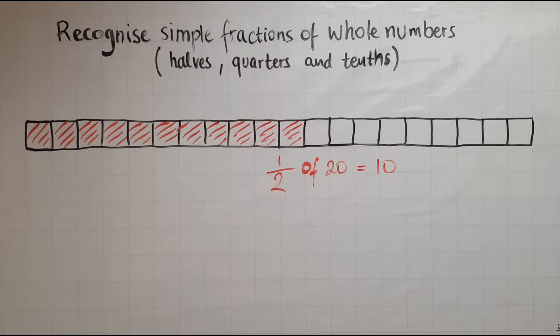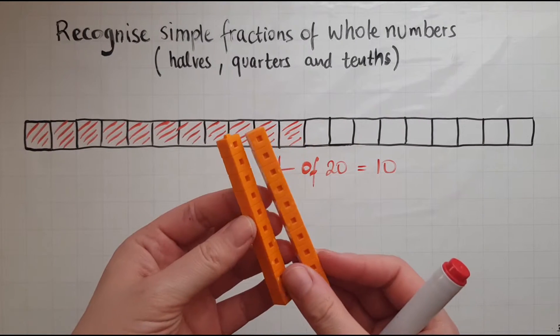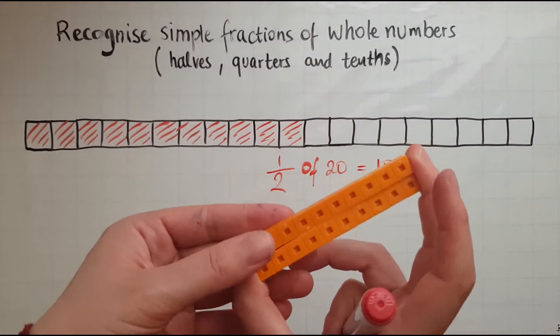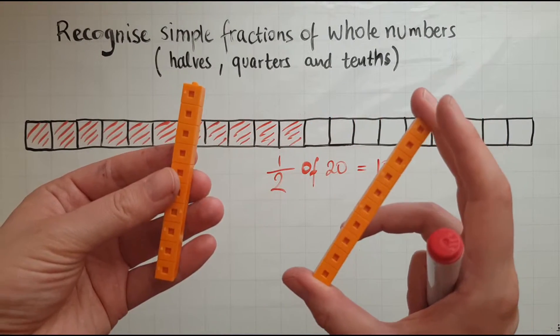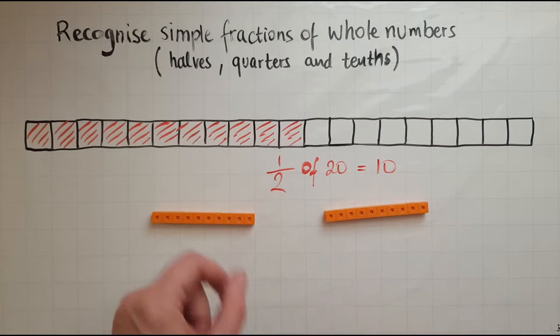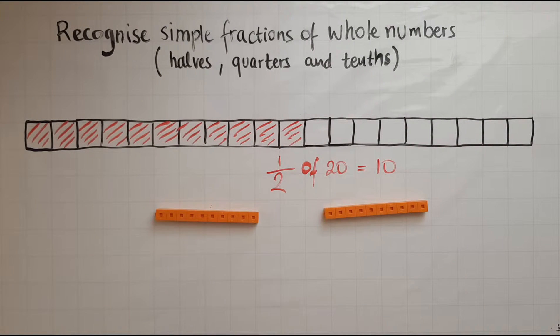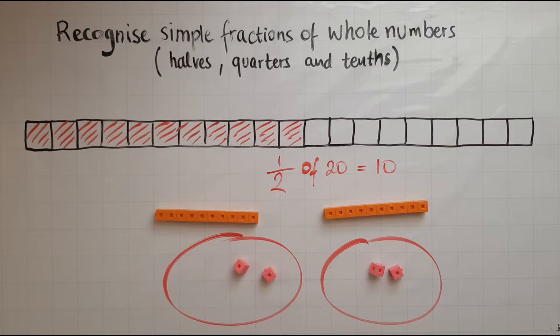How else could I have done this? So I've got 20 small cubes into halves. That would be one 10 and another 10. And another way to do this would be perhaps to get the 20 and create two small groups or sets and try and place them one at a time.